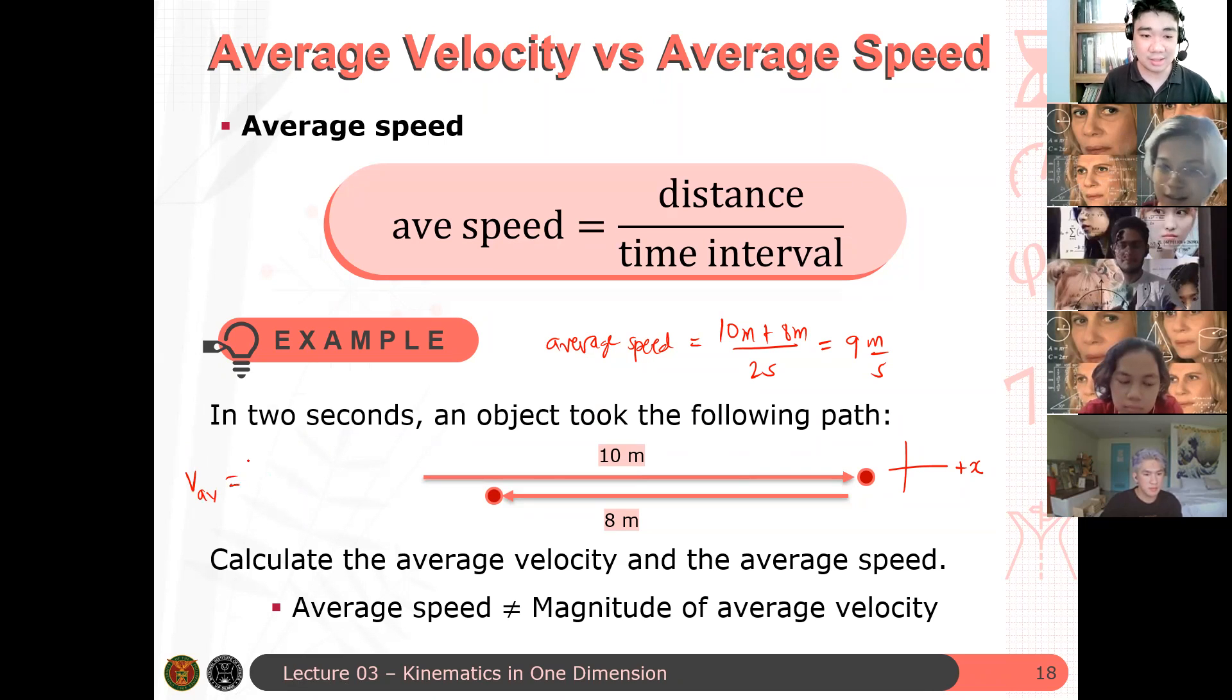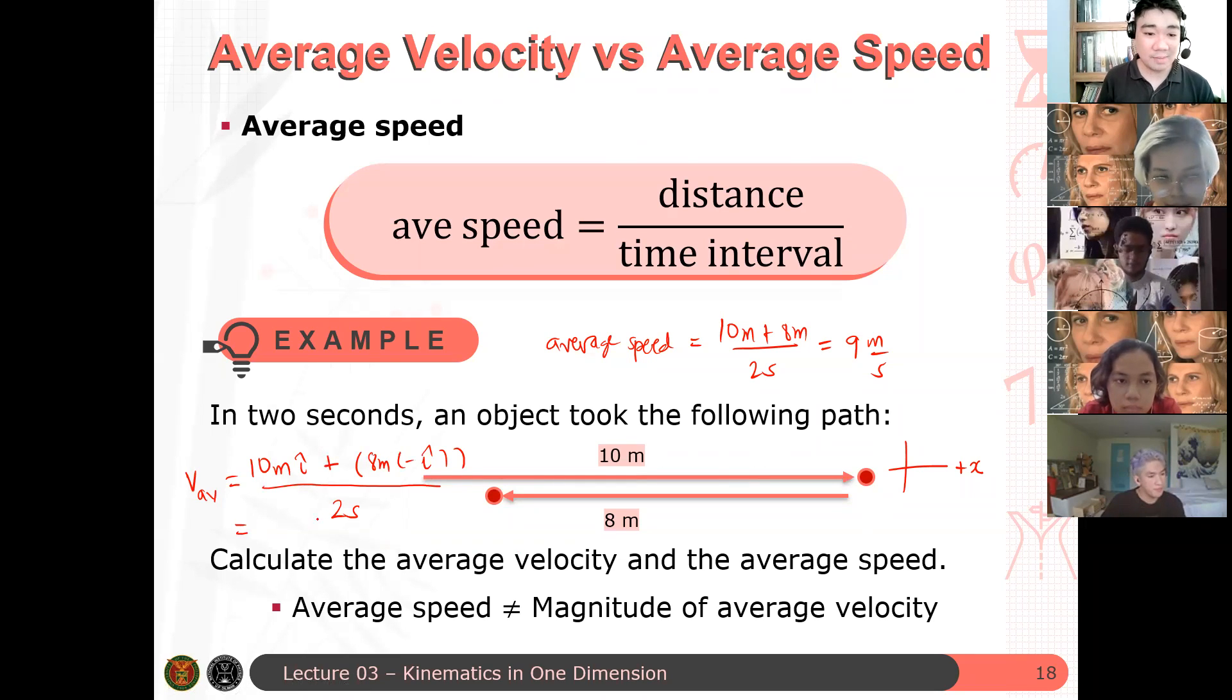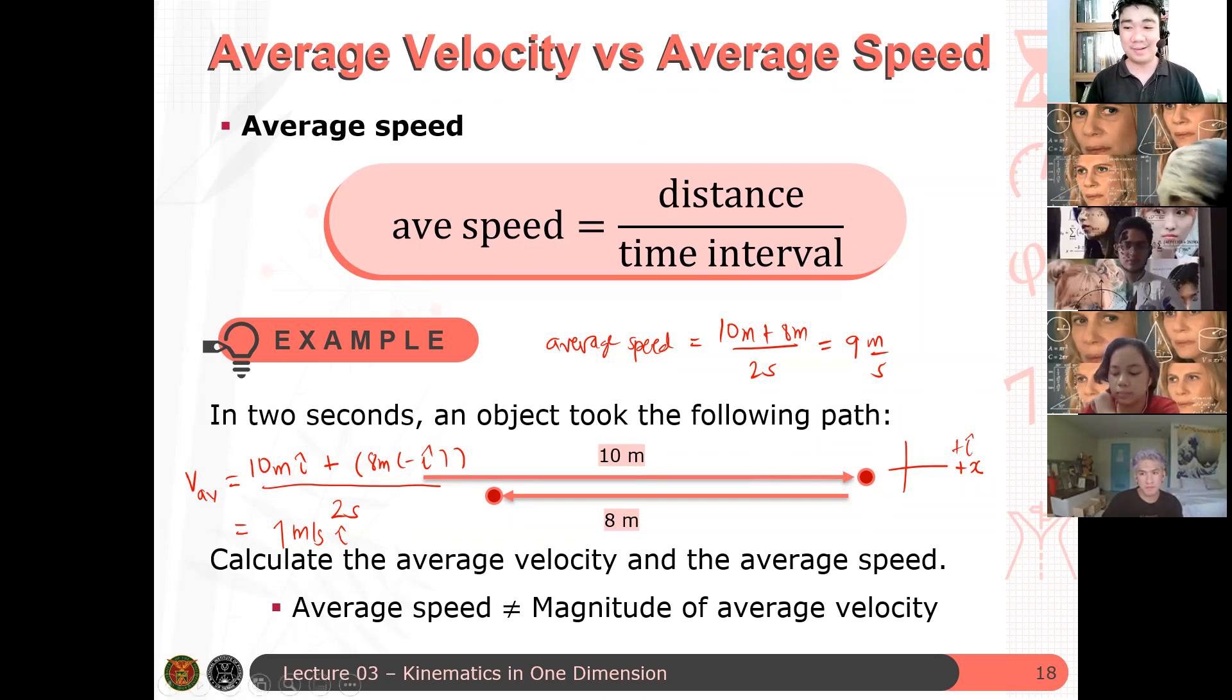So what's the answer to this? So you have, okay, so the average velocity is just 10 meters i-hat total displacement traveled, plus an 8 meters negative i-hat all over 2 seconds. So the answer should be what? One meter per second. One meter per second. Yes. One meter per second. But something's missing. This is a vector, right? It should have i-hat. Right? Again, I'm using the positive i-hat to be the one that's towards east. Okay? Is that correct?